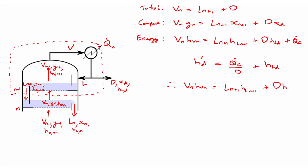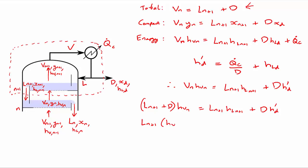Substituting the total energy balance, we get that Ln+1 plus D times the vapor enthalpy equals the liquid enthalpy plus the distillate term. Rearranging and combining liquid and distillate flows, we find that the ratio of liquid flow to distillate flow Ln+1/D equals the ratio of the enthalpy difference between H prime D and HVn over the difference between HVn and HLn+1.